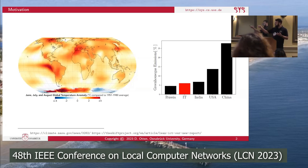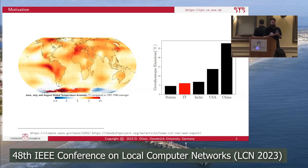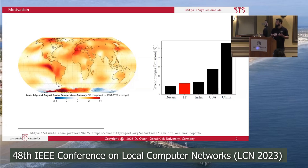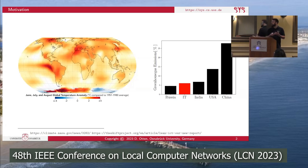I prepared a small figure here on the right side. Our IT infrastructure is responsible for nearly as much greenhouse gas emissions as the whole economy of India. Depending on the source, up to 10% of the global greenhouse gas emissions are caused by our IT infrastructure.